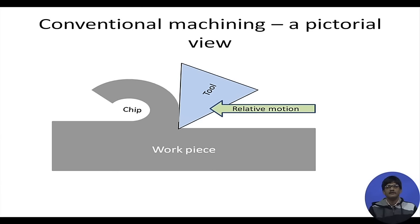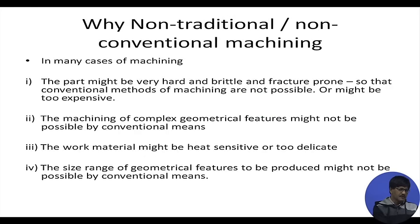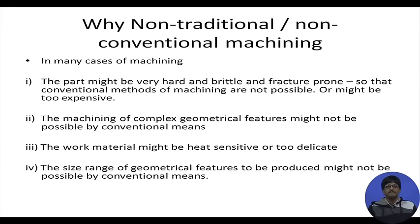In conventional machining, the tool has to be harder than the work piece, have a sharp edge, and a well-defined geometry. All these things can become very difficult to maintain in stringent situations. Compared to conventional machining, why would we go for non-traditional machining? In many cases, the work piece material may be very hard and brittle.